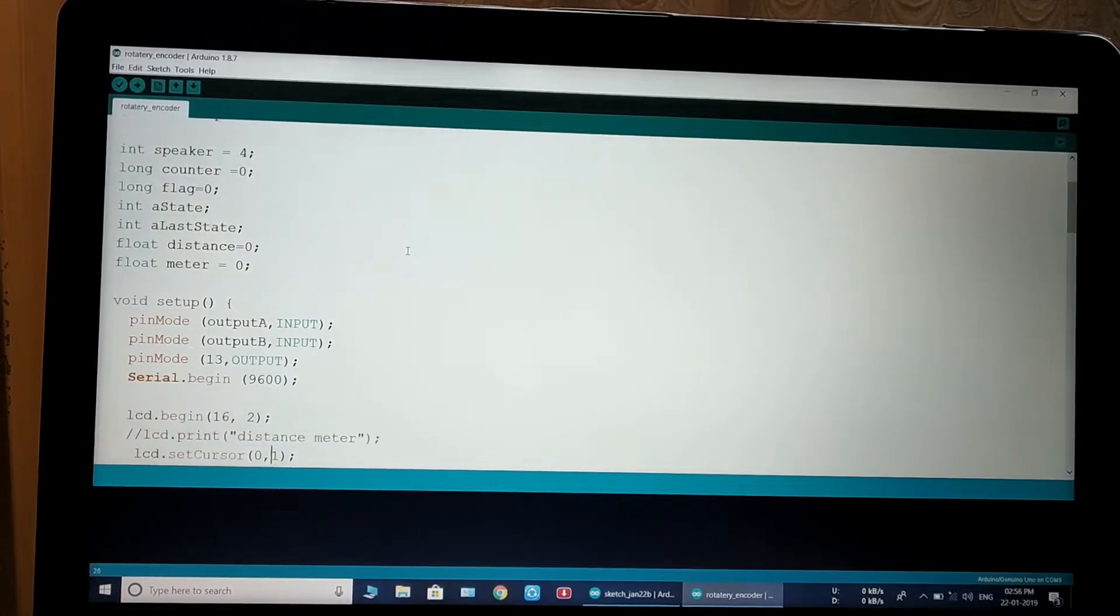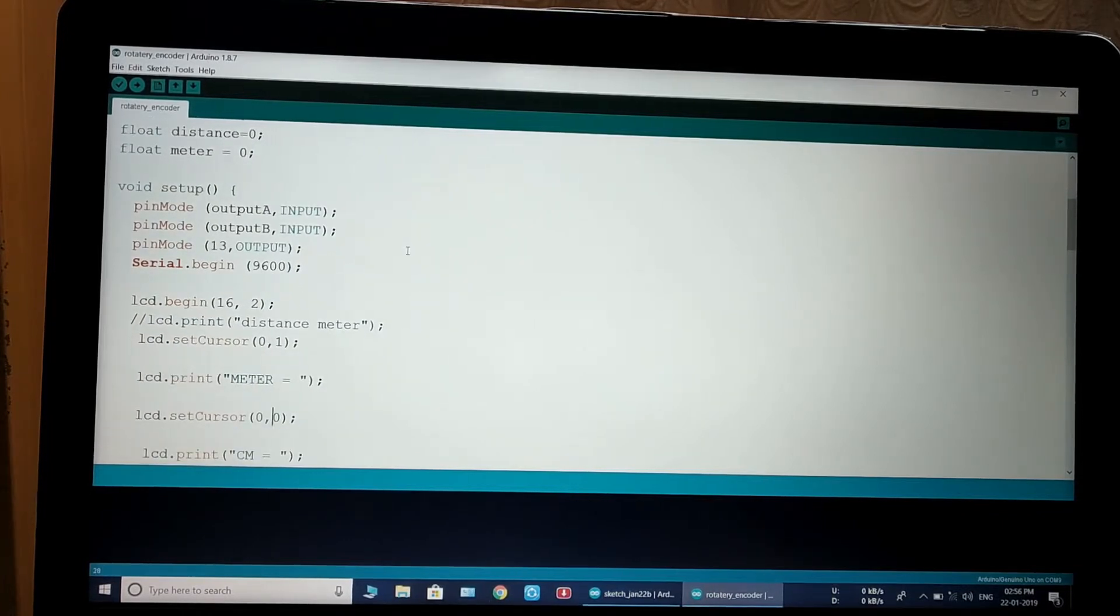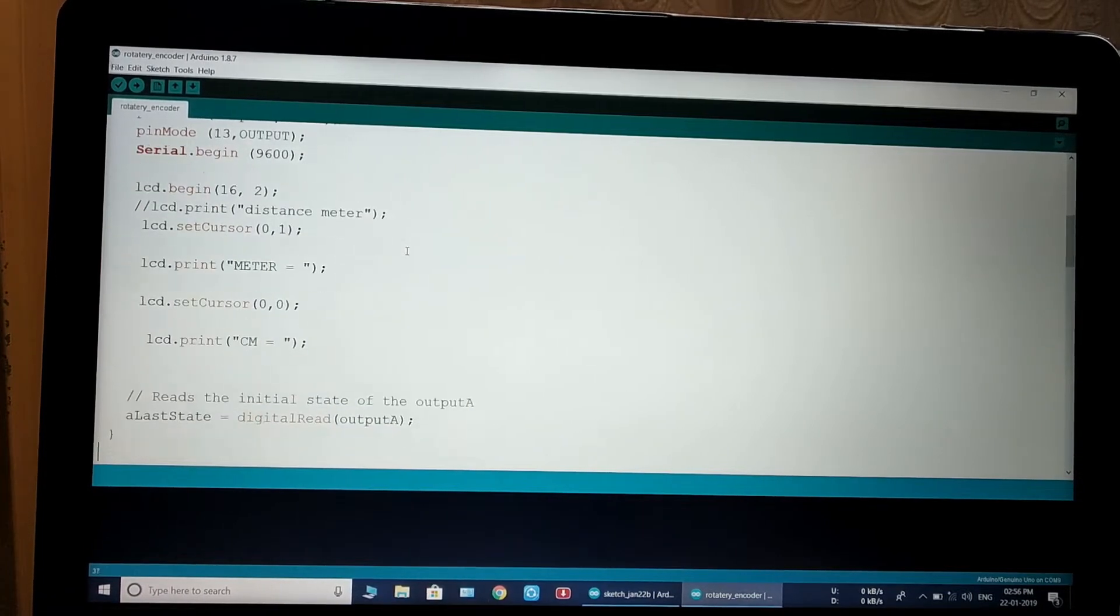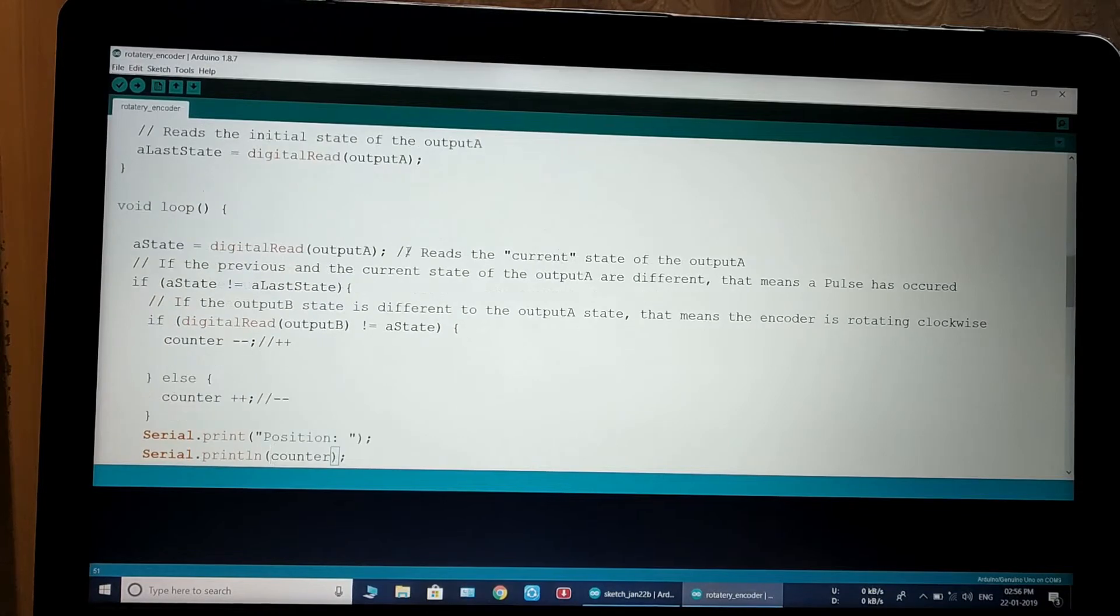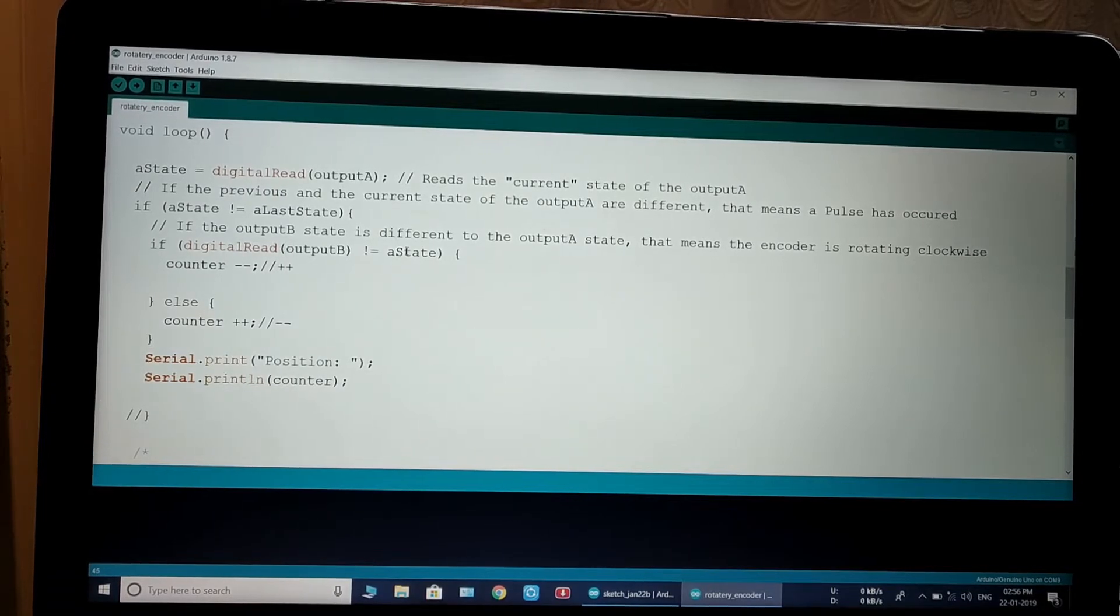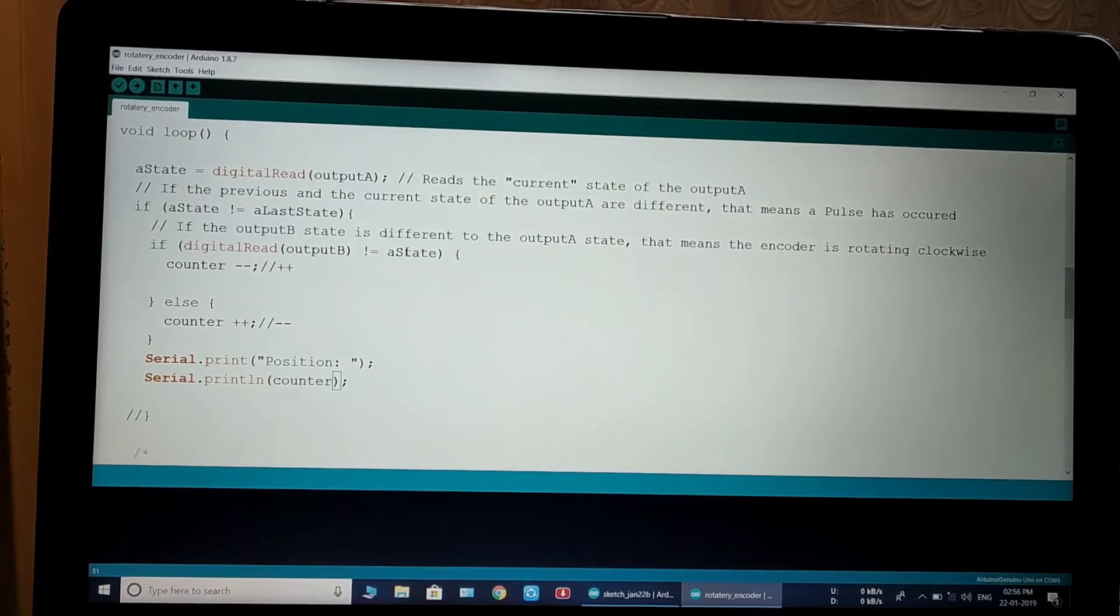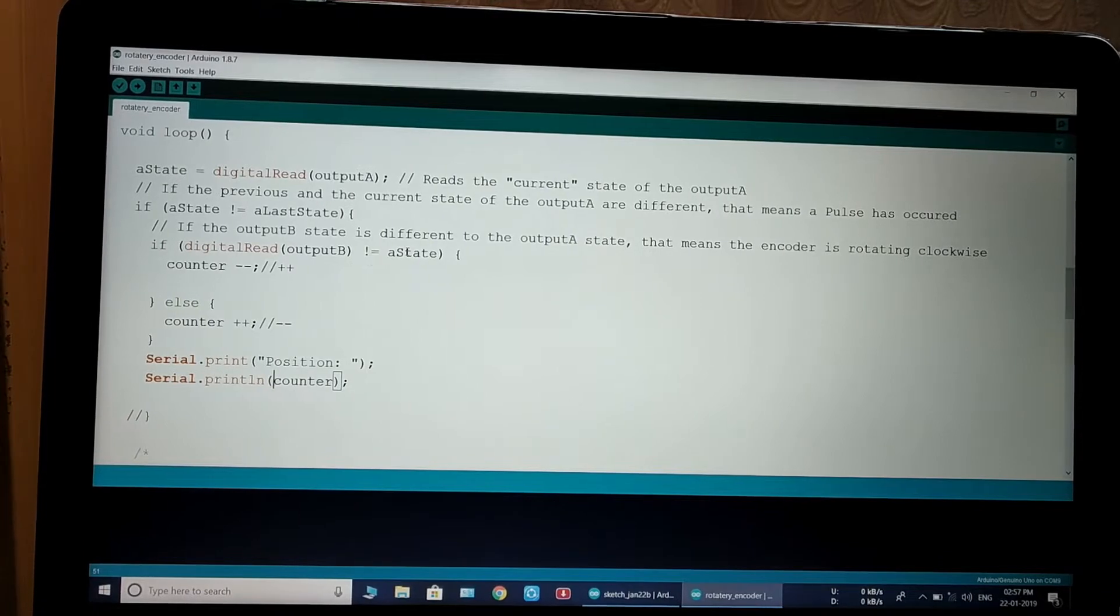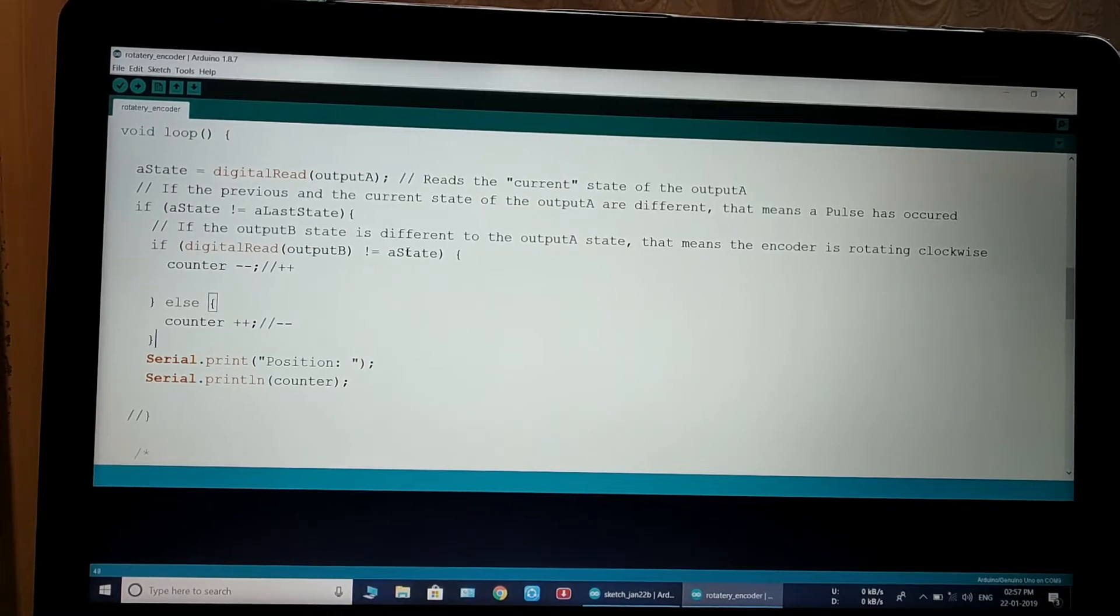This is the message printed on the LCD screen. This is also a message printed on the LCD screen. This is the position counter. It reads the number of positions from the encoder. This is the negative counter, this is positive counter.